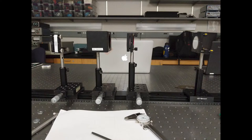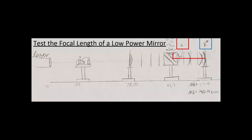To determine the focal length of a low power mirror, a large aperture wedge shear plate is placed into the system between the beam expander and the low power mirror.